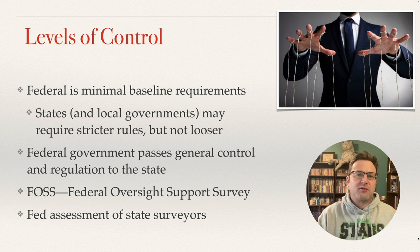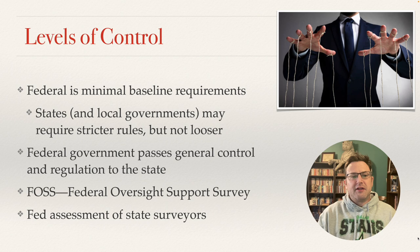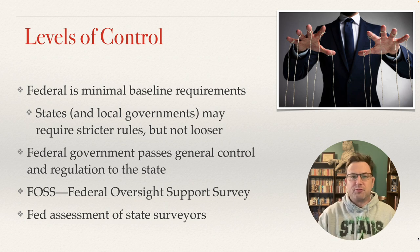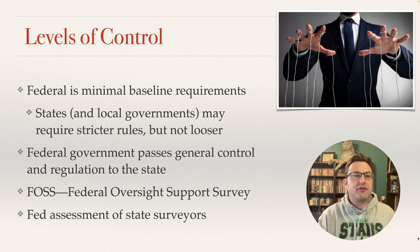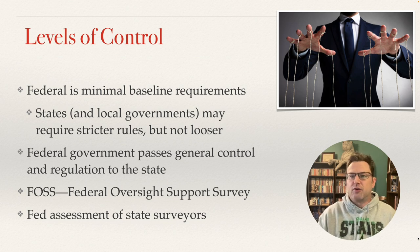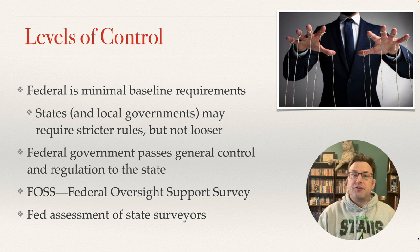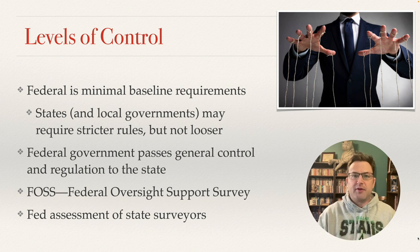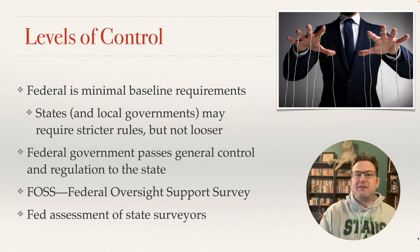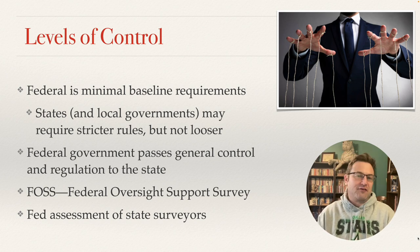In long-term care, the federal standard is the minimum base standard requirements. States and local governments can require stricter rules but they can't go looser than the federal rules. The federal government passes general control and regulation to the state, then offloads the responsibility of surveying and maintaining those controls to the state by giving them block grants. Occasionally there is also a federal oversight support survey where federal surveyors come out — it literally looks like the Men in Black showing up — and they survey the state team doing a survey, to see if the state is surveying correctly.